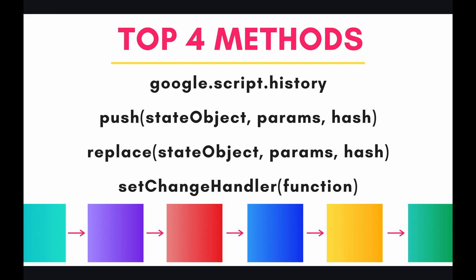Let's look at the top four methods. They are google.script.history to start off, then the push method, the replace method, and the setChangeHandler method. We're going to take a look at each of these in the code, so let's jump over there right now.